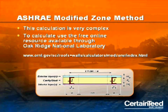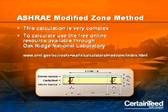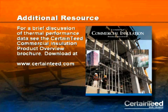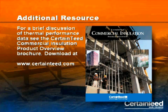The modified zone method is a complex calculation, so if you or an associate wish to make calculations for steel or masonry assemblies with strong thermal bridges, we suggest you use the free online calculator at the Oak Ridge National Laboratory — the web address is on the screen. For a brief discussion of thermal properties and thermal performance data, download the CertainTeed commercial insulation product overview at CertainTeed.com.